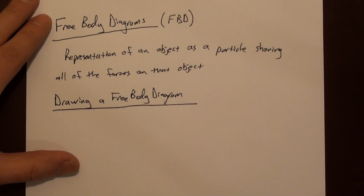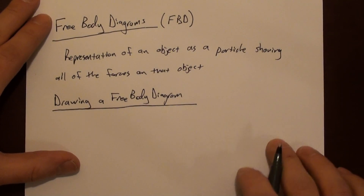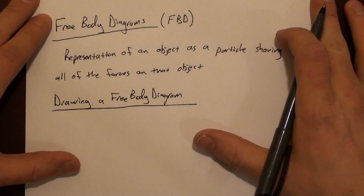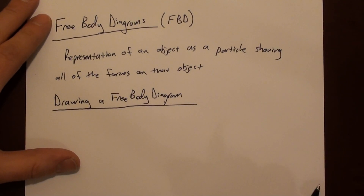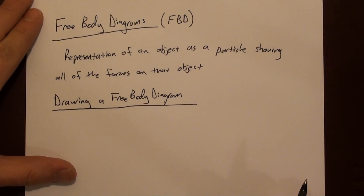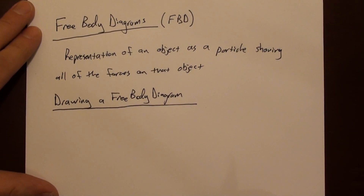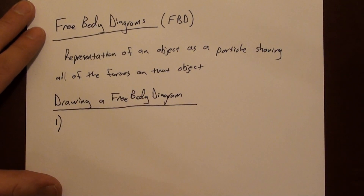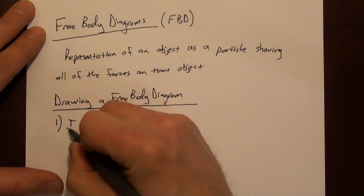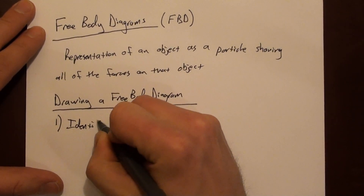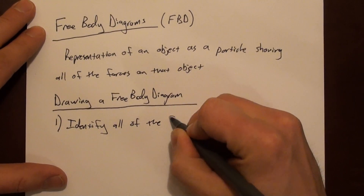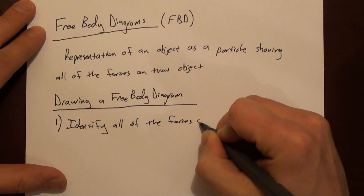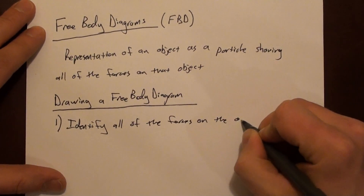It helps in determining how something is moving. If we need to figure out how something is moving, we need to know what forces are acting on it and in what direction. This is just a formal way of approaching that. So first is to identify all of the forces on the object of interest.